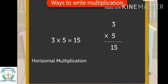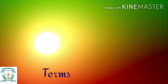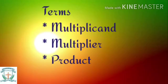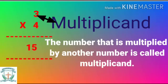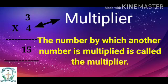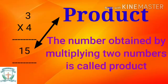Let us look at the ways to write multiplication. This is called horizontal multiplication and this is vertical multiplication. We use the terms multiplicand, multiplier, and product. The number that is multiplied by another number is called the multiplicand — here, three is the multiplicand. The number by which another number is multiplied is called the multiplier — here, four is the multiplier. The number obtained by multiplying two numbers is called the product — here, fifteen is the product.